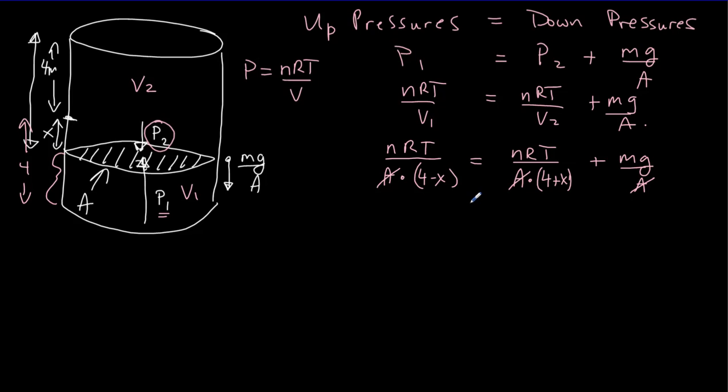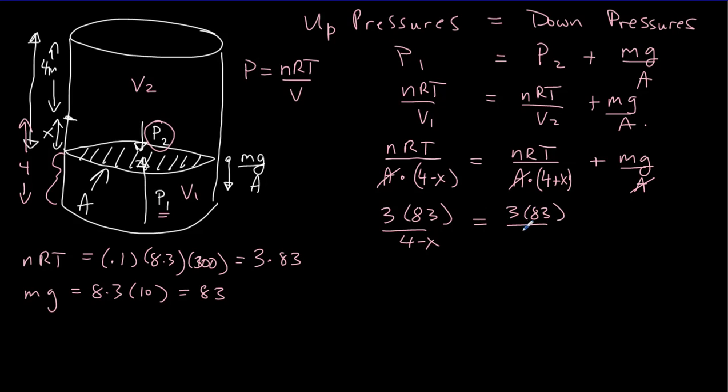So we should be able to do some simplifying. nRT is going to equal 0.1 times 8.3 times 300 and mg will equal 8.3 times 10 which is 83. So this here is going to be 3 times 83 whereas this one is just 83. So let's put that in. 3 times 83 all over 4 minus x equals 3 times 83 all over 4 plus x plus 83. So of course the 83s are going to cancel out.